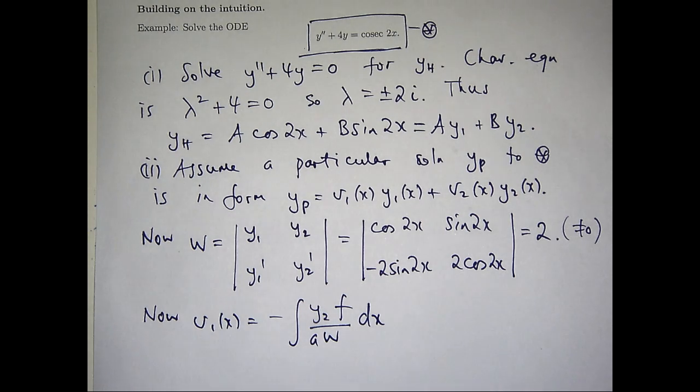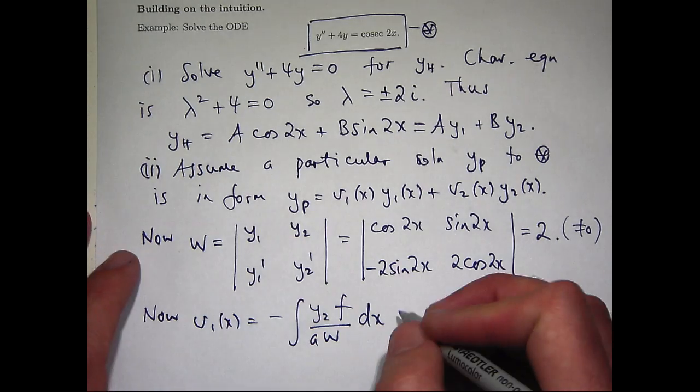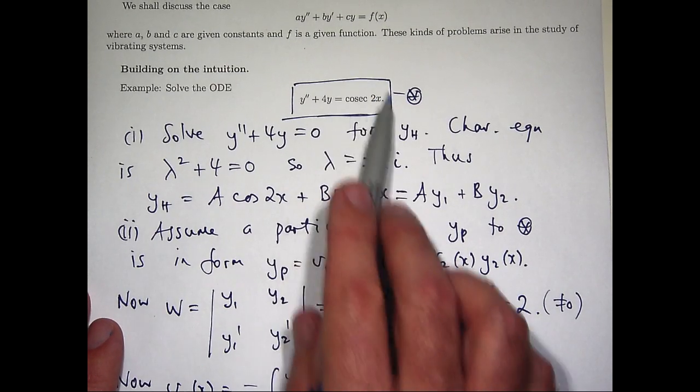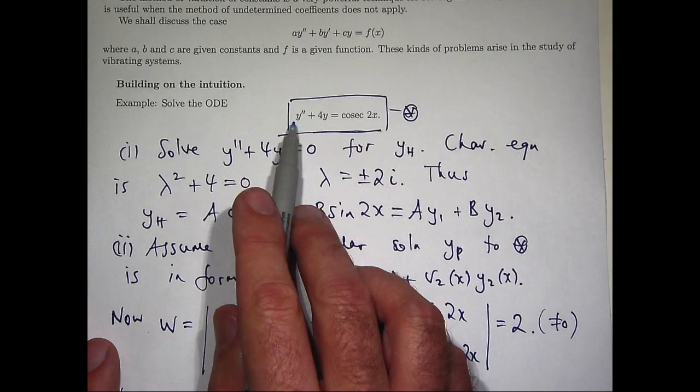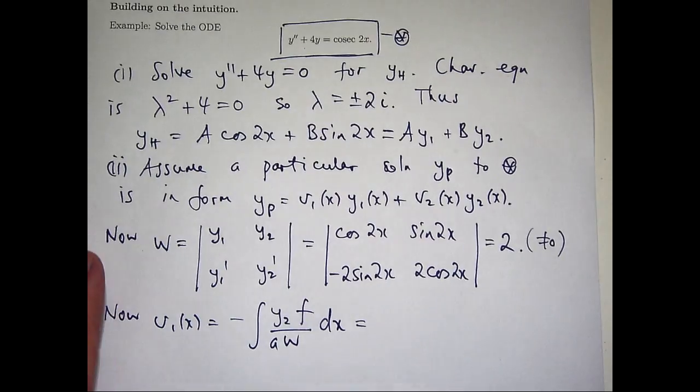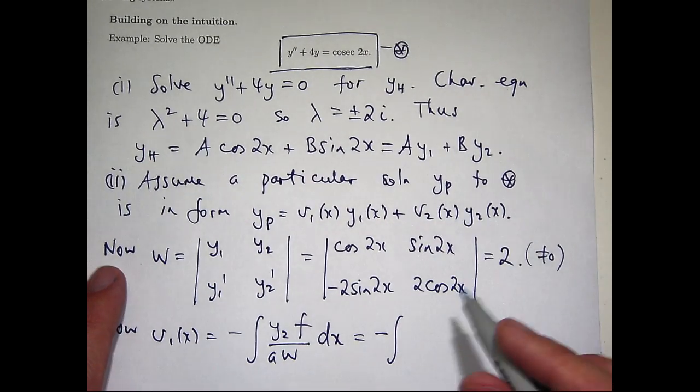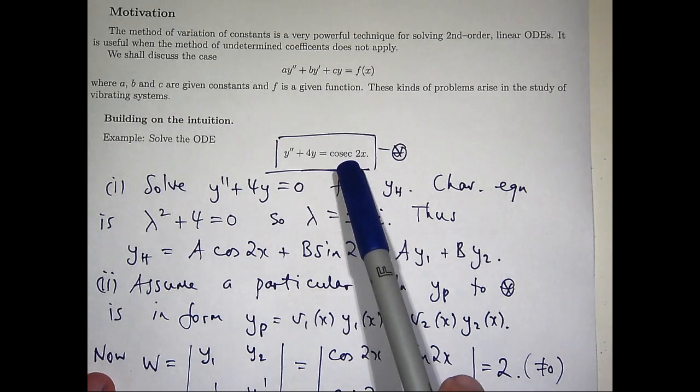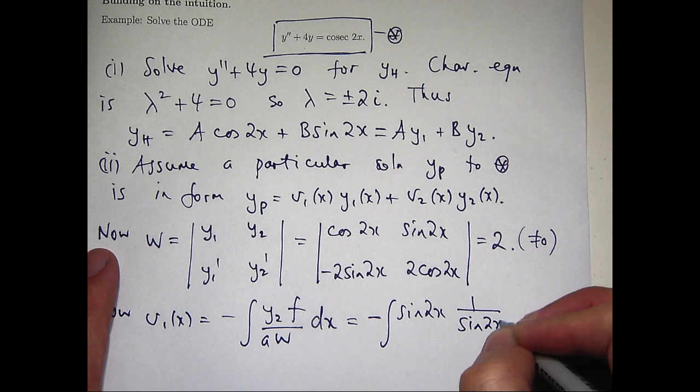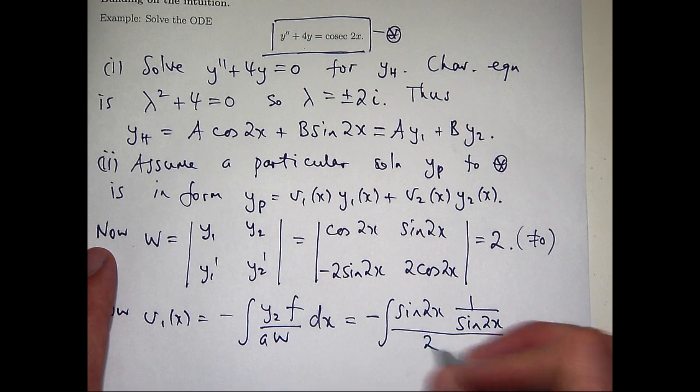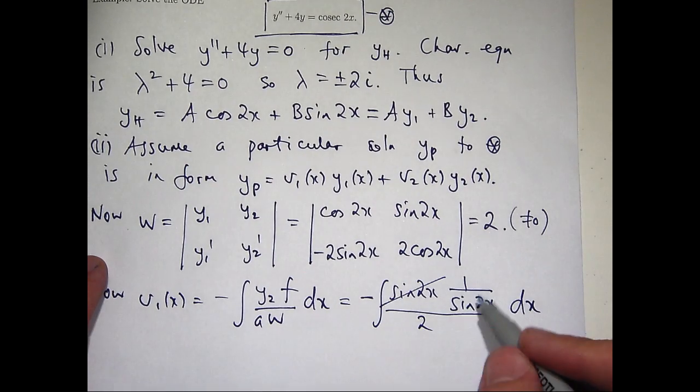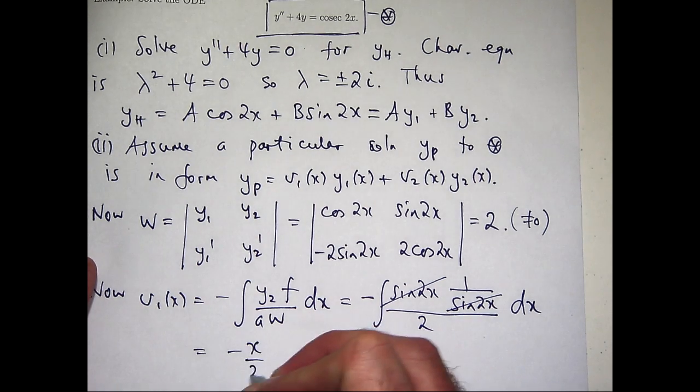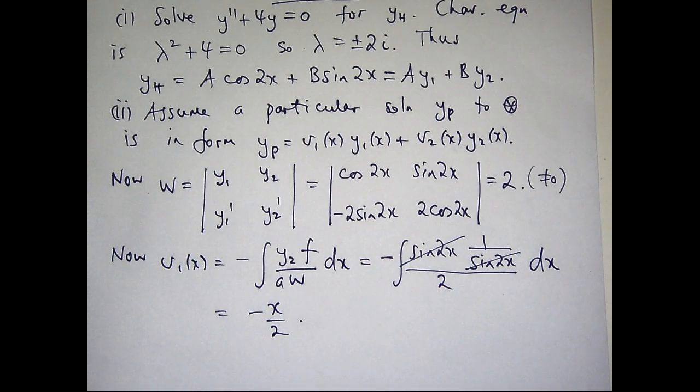This is my v1 function just using our formula. I've left off the x's here just to save a bit of space. So all I really need to do is do an integration here. So y2 is sin(2x), f the right-hand side is cosec(2x), a the coefficient of y'' is 1, and I've already calculated W to be 2. So let's just put all those things in. y2 is sin(2x), f is cosec(2x). Now cosec is 1 over sin, so hopefully you can see this is going to cancel off. And when I do that integration, I'll get -x/2.